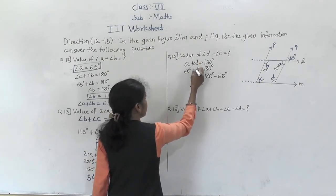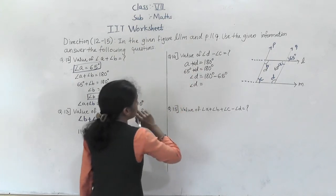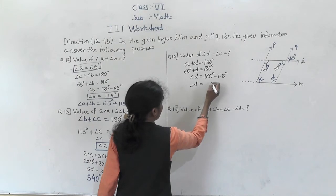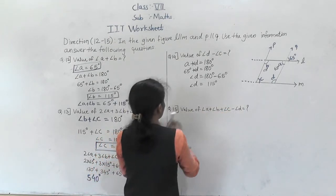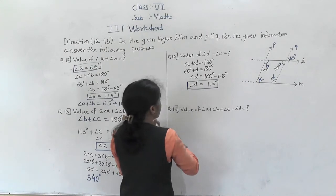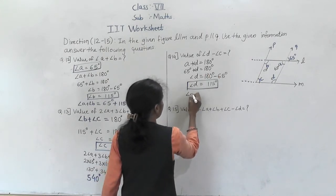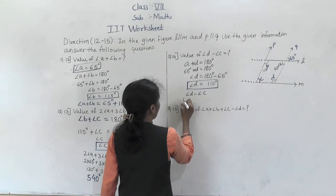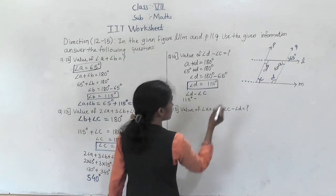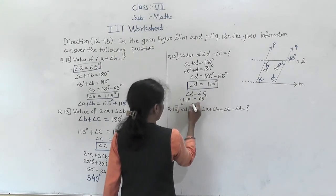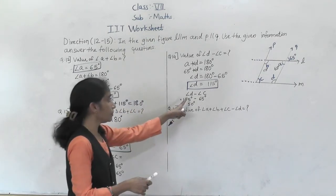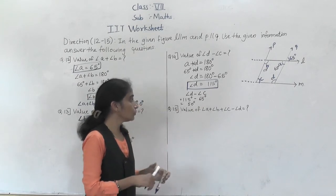So angle D equals 115 degrees. Now angle D minus angle C: angle D is 115 degrees minus angle C which is 65 degrees. So the answer is 50 degrees. Angle D minus angle C equals 50 degrees.